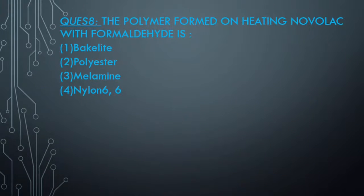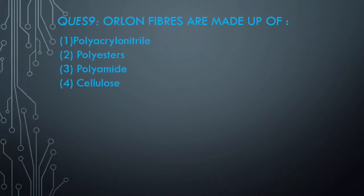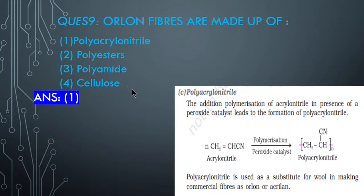The polymer formed on heating Novolac with formaldehyde - answer in the comment box. It is Bakelite. The Orlon fibers are made of: from addition polymerization. The answer is polyacrylonitrile.